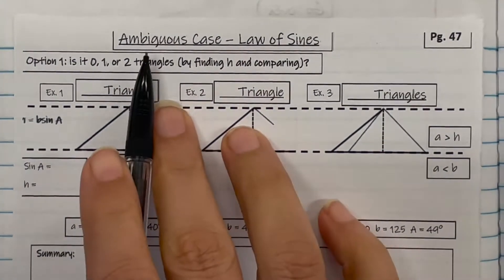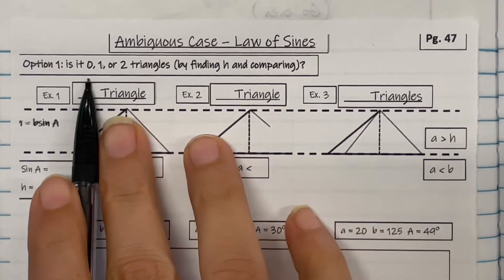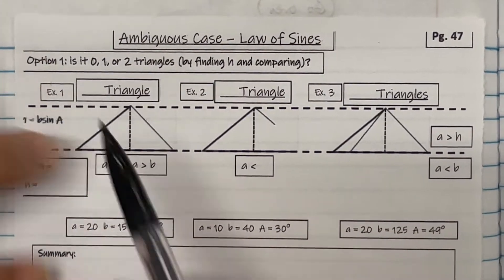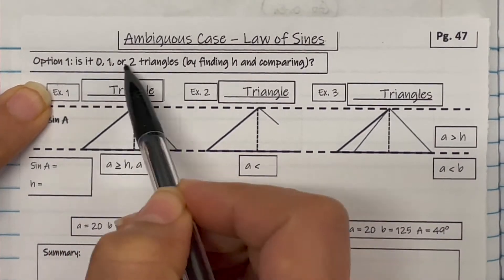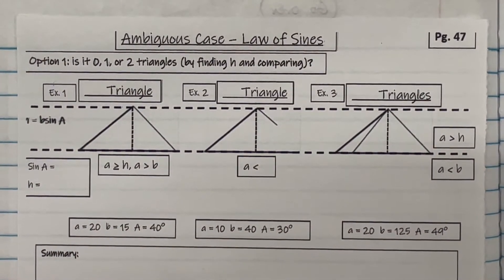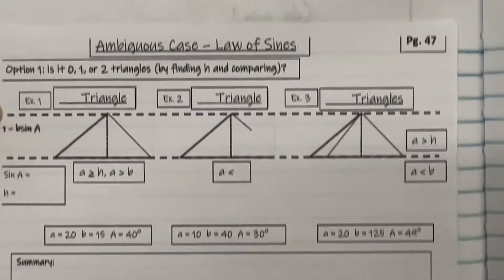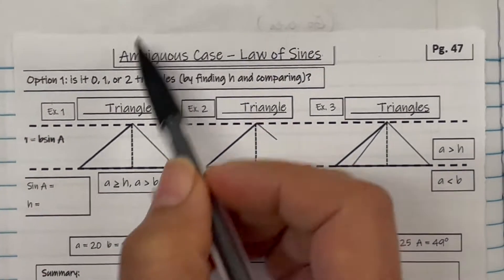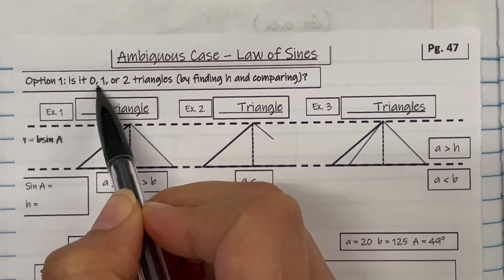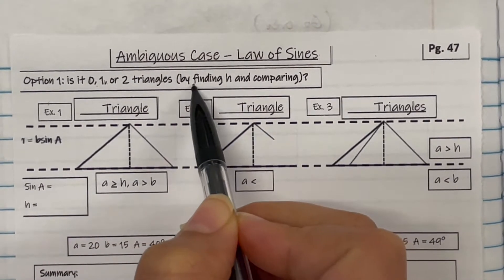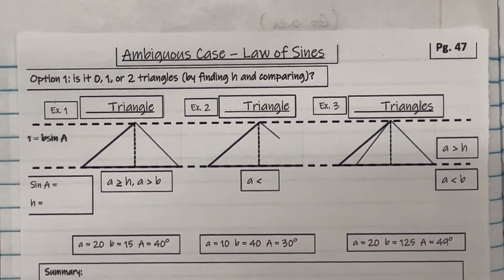All right, we're going to take a look at an ambiguous case of the law of sines. So there are two ways you can do this. I'm going to show you both, but option two will be my preference. The question is: is it zero, one, or two triangles? You need to find H and compare H to different options.